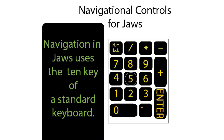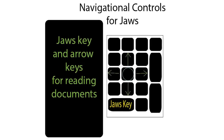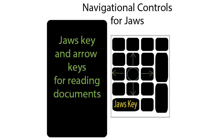Navigational controls for JAWS. JAWS navigation uses the 10-key numeric keypad on the standard keyboard. The JAWS key, when used with the arrow keys, can help you navigate the reading of a document. Using 8, 4, 6, and 2, you can move through a document and read using the JAWS key.